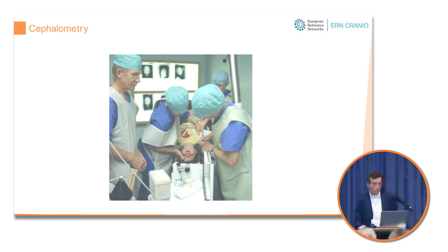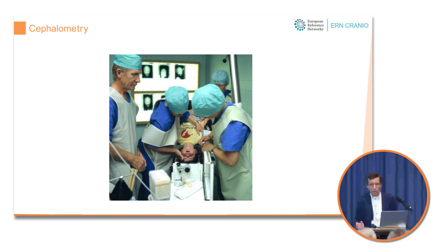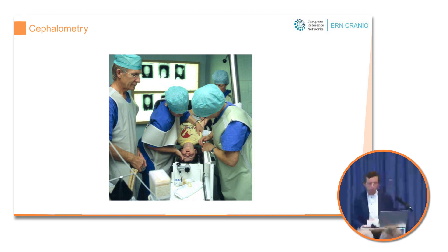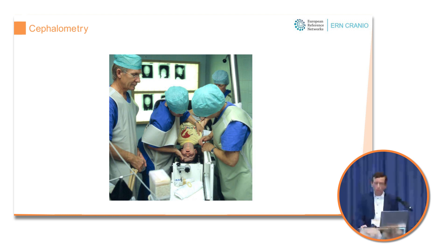For many years, cephalometry was our workhorse to diagnose and follow up craniosynostosis. It had, however, several drawbacks. It was often hard to see the synostotic suture, so we had to rely on secondary changes of shape. It was not possible to accurately make a diagnosis of a combined synostosis or, for example, a frontosphenoid synostosis.